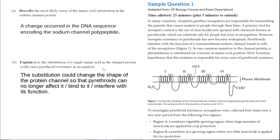You have to link that amino acid change to the shape change, and then explain what that shape does to how the pyrethroids interact. If you didn't make that last connection, you would not get the full points, because we're discussing how does it cause resistance. It must be interfering with the protein channel, since pyrethroids interfere with the function of the transmembrane sodium channel.